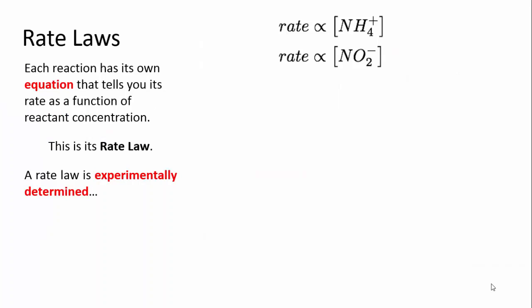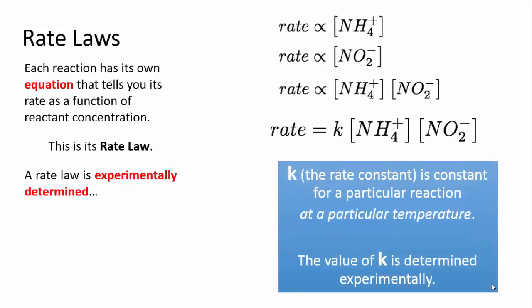So to summarize what we've got for this particular reaction, the rate is proportional to both the concentration of ammonium and that of nitrite. The rate is therefore proportional to the concentration of ammonium multiplied by the concentration of nitrite. Now, to turn this expression into a proper equation, there has to be a constant that we multiply the concentrations by to give us the actual numerical value of the rate. So we rewrite the expression like this as a rate equation or a rate law.